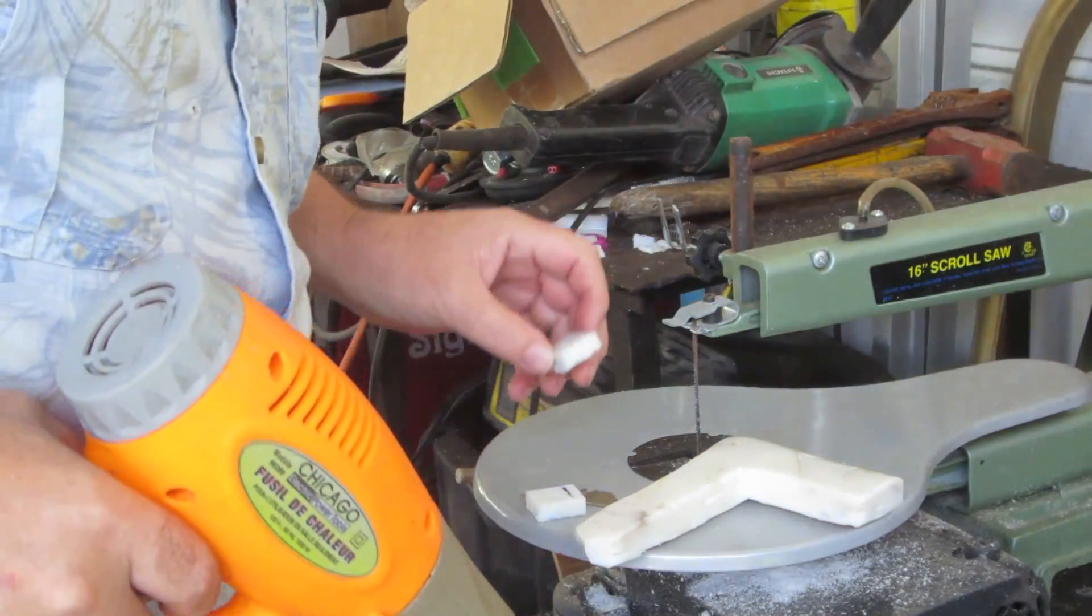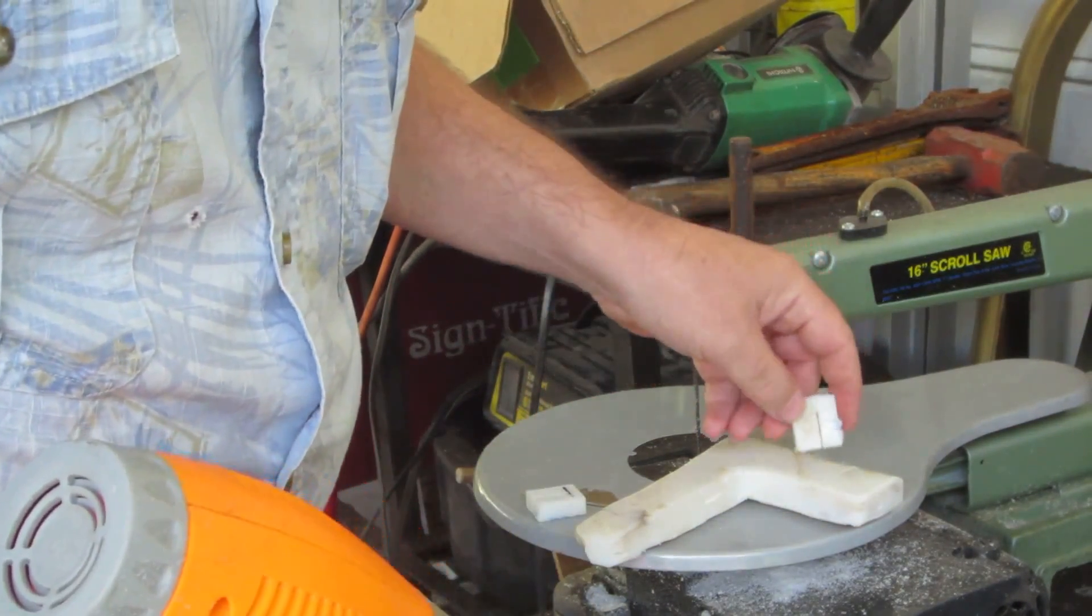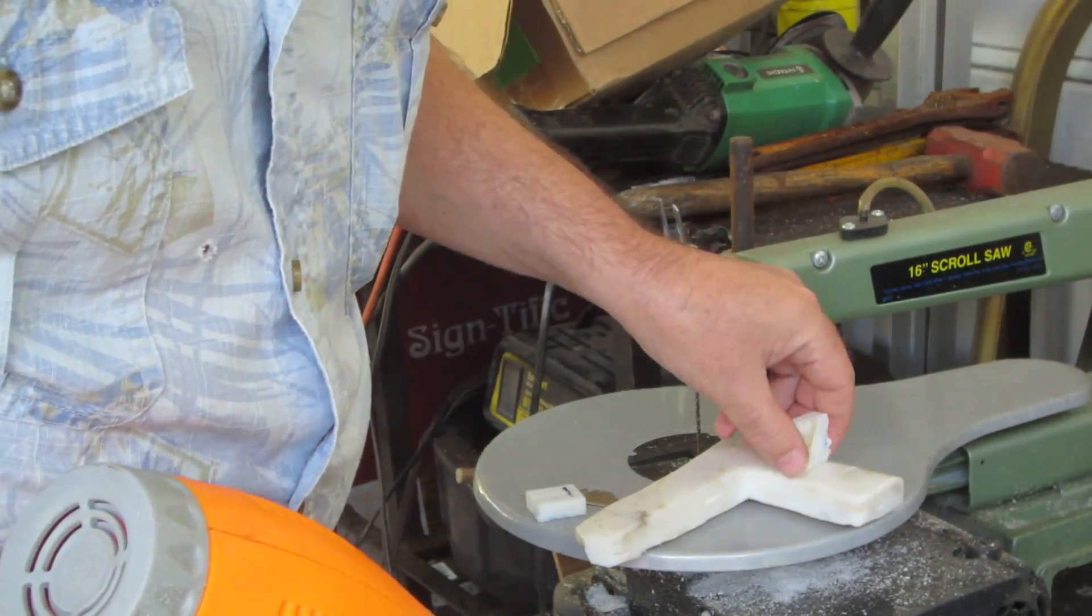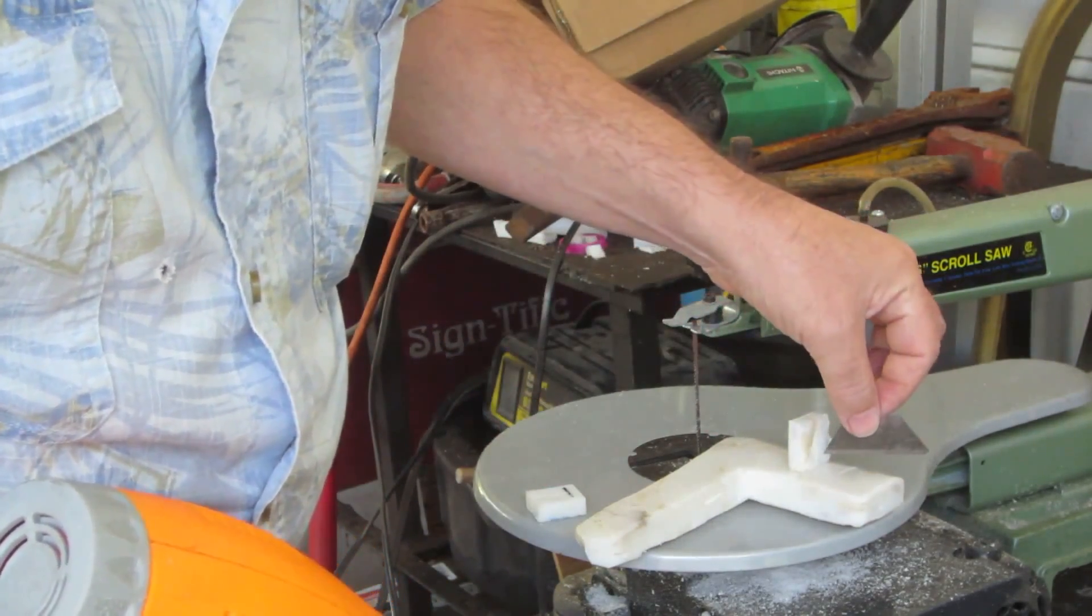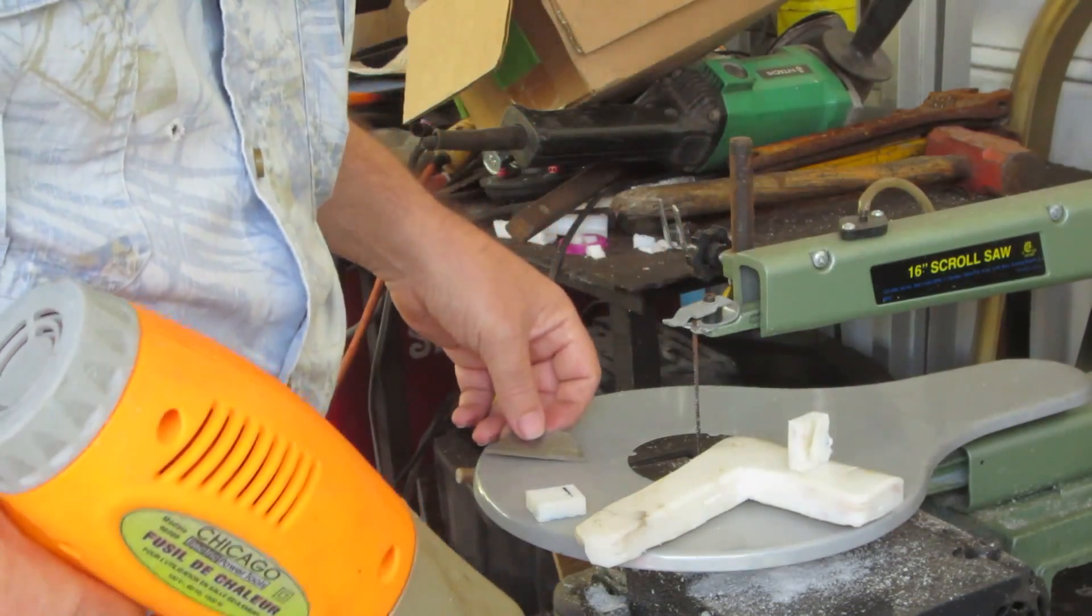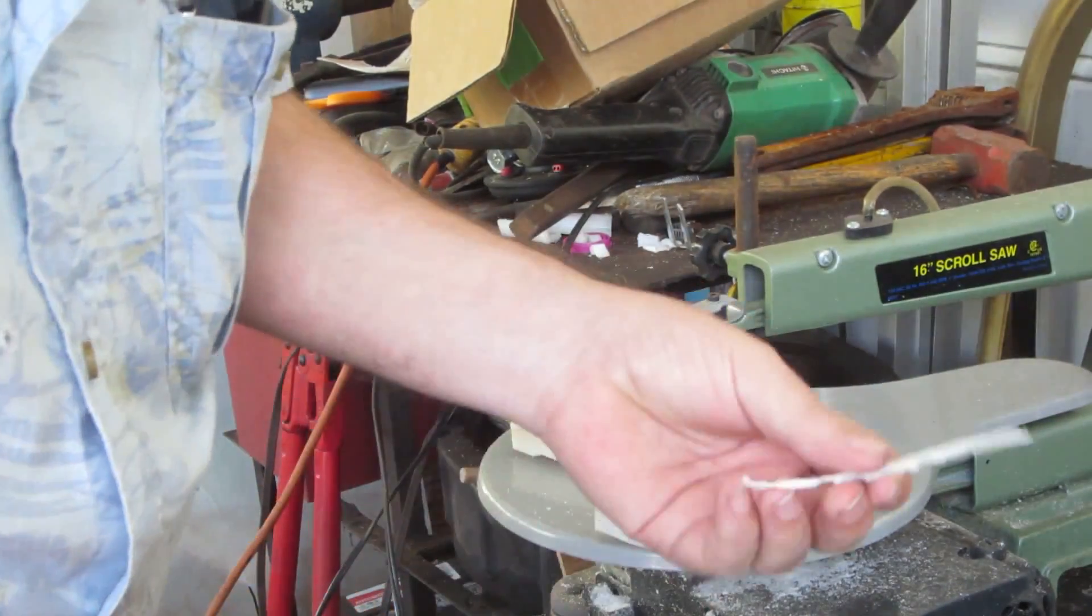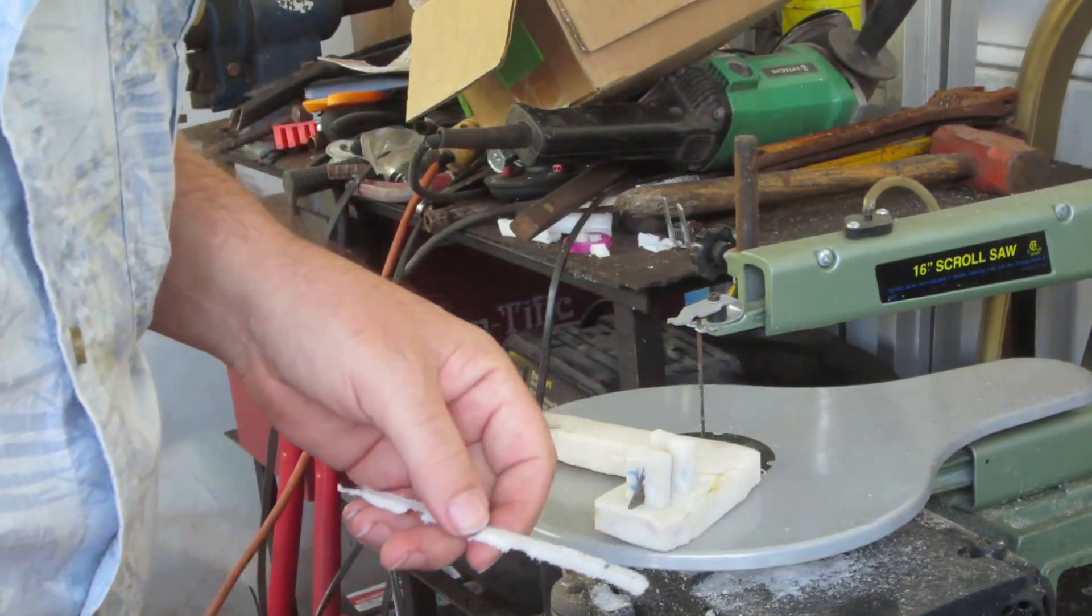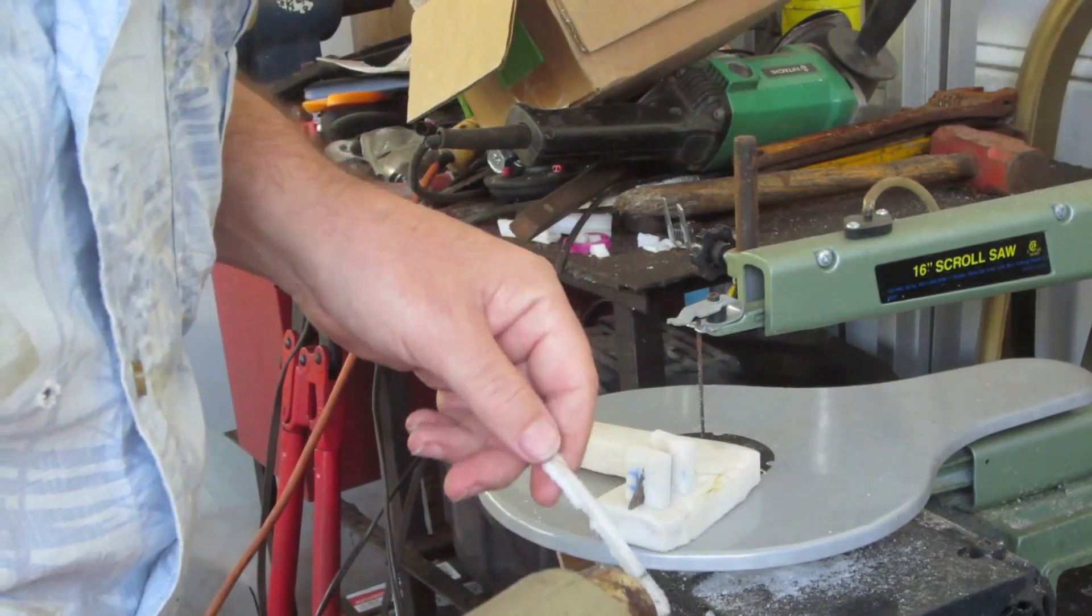Now I'm going to weld these to here so I have something to set my blade and mount it to it. I'm going to use a piece of scrap of this I've cut off to weld it to it.